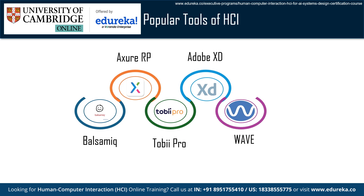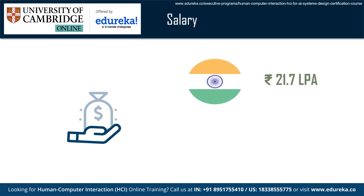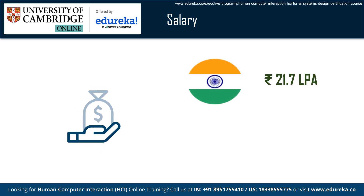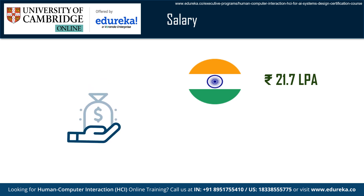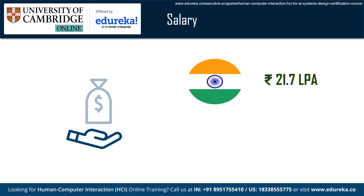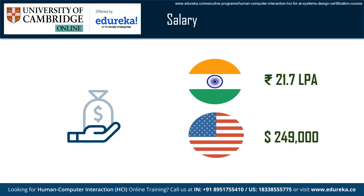According to sixfigure.com, the average salary for a human-computer interaction professional is approximately 21.7 lakhs per annum in India. The estimated average pay for an HCI professional is approximately $249,000 per annum in the United States.